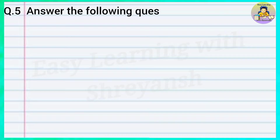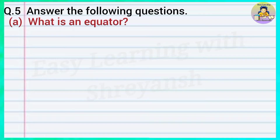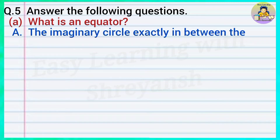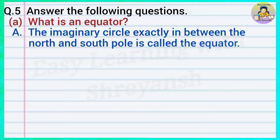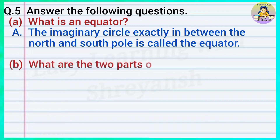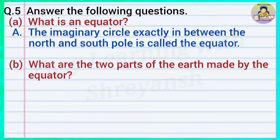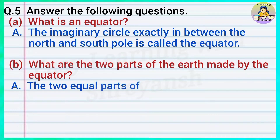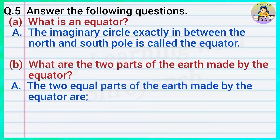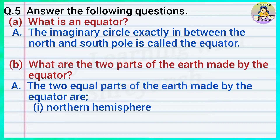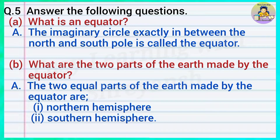Question number five: A — what is an equator? Answer: The imaginary circle exactly in between the north and south pole is called the equator. B — what are the two parts of the earth made by the equator? Answer: The two equal parts made by the equator are the northern hemisphere and the southern hemisphere.